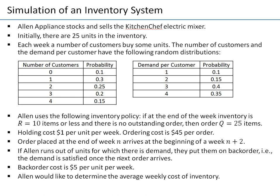We will also consider back orders. If there is demand and no units are available, we put that demand on back order and satisfy it when the next batch of 25 items arrives. This is not free — there is a back order cost of $5 per unit per week. So every week customers are waiting, we pay $5, and if they wait multiple weeks, we pay $5 multiple times. Allen would like to simulate this inventory system to determine the average weekly cost.